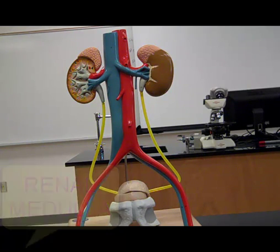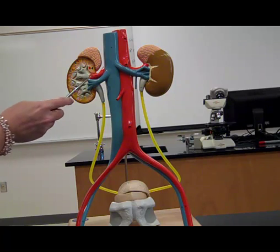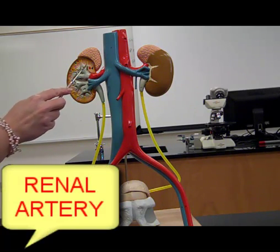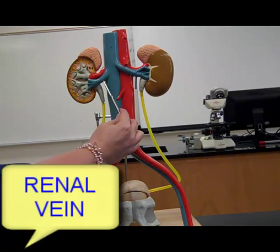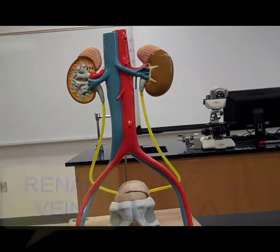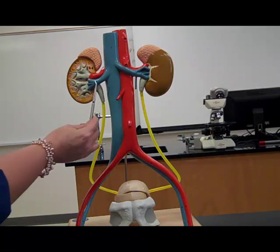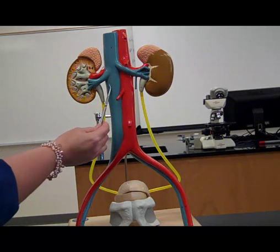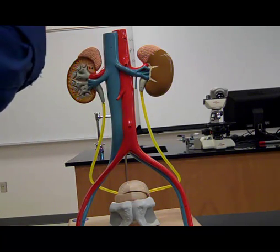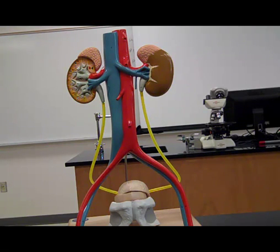There are some blood vessels that feed each kidney, right and left. We have the renal artery, bringing oxygenated blood into the kidney. And we have the renal vein, bringing deoxygenated blood away from the kidney. The renal vein connects up with the inferior vena cava, sending all the blood from below the heart back up to the heart itself.